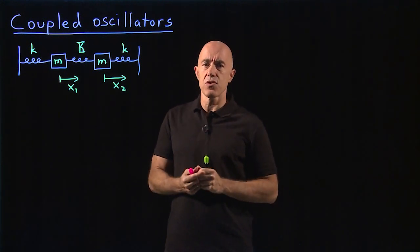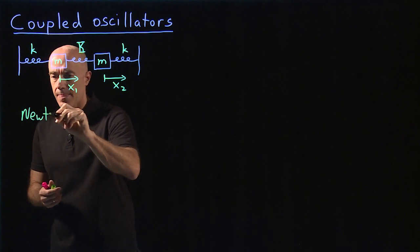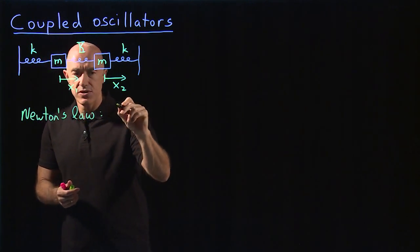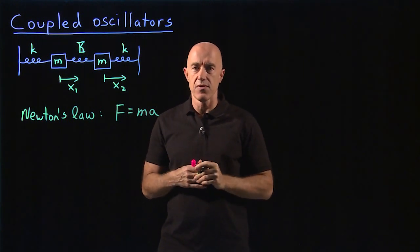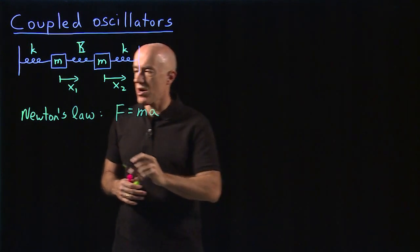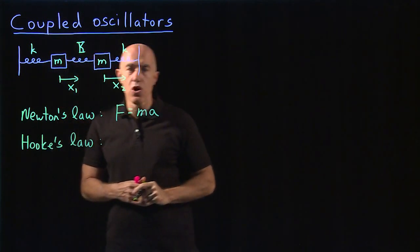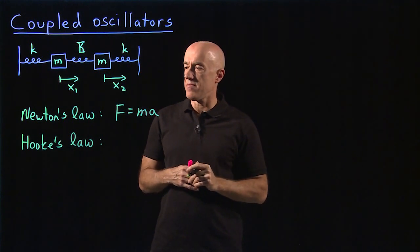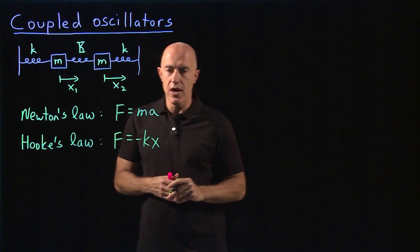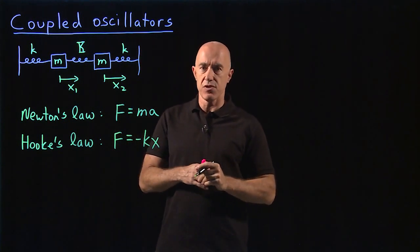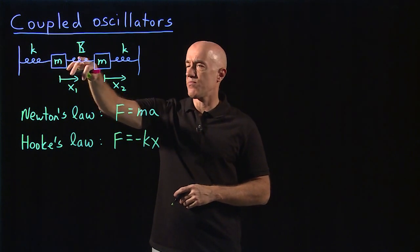There's two physical laws that we need to write down the governing equation. The first is Newton's law, which everybody knows, which is just force is equal to mass times acceleration. The acceleration is, of course, the second derivative of the position with respect to time. The second law is called Hooke's law, which is a law that is used to understand motion under spring forces. This is written as F equals minus kx, where x is a displacement of the mass from its equilibrium position. And k is called the spring constant. So here we've written down what the spring constants should be.